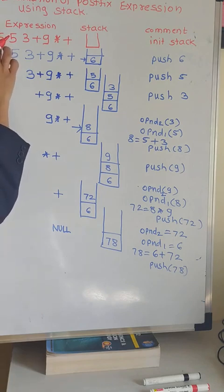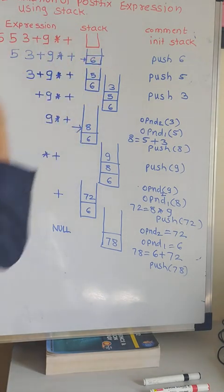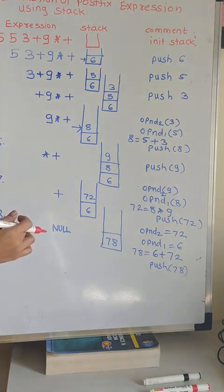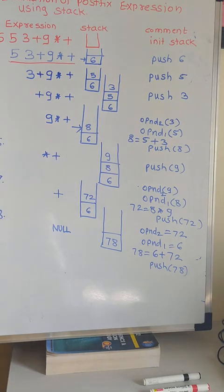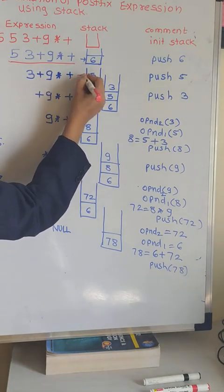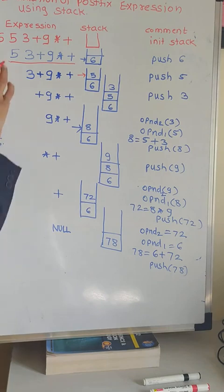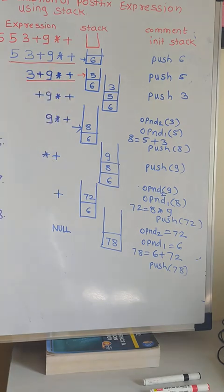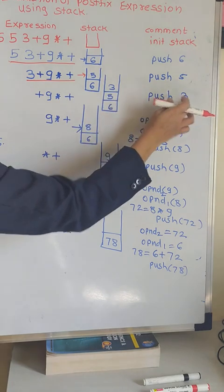The first token in the expression is 6. If it is an operand, push on the stack. Write in the comment: push 6. You can use the push function to insert the element into the stack. The remaining expression is 5, 3, plus, 9, into, plus. Now, 5 is again an operand, so push 5 on the stack. Write in comment: push 5. Remaining string is 3, plus, 9, into, plus. 3 is again an operand, so push 3 on the stack. Write here: push 3.